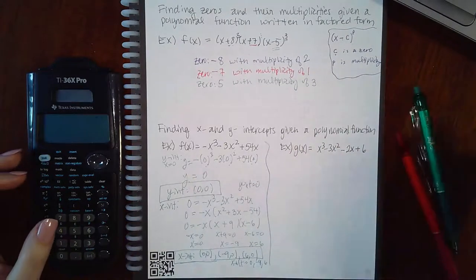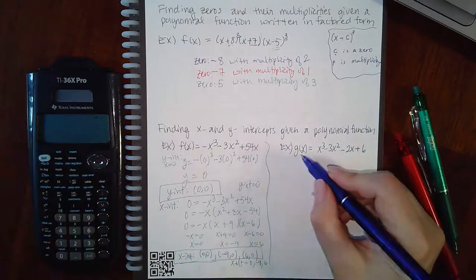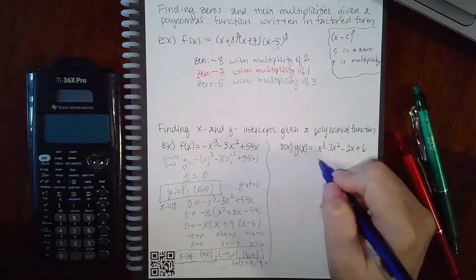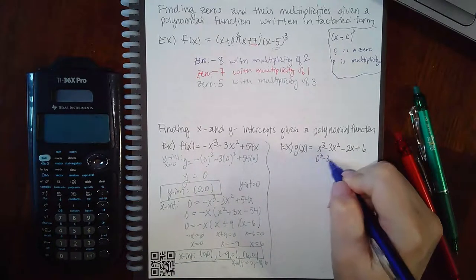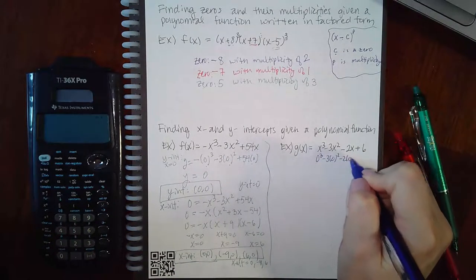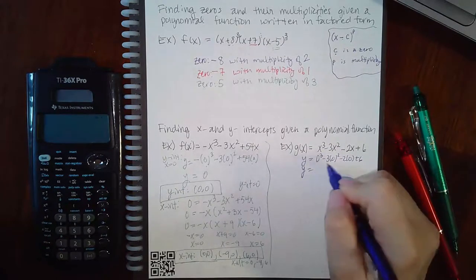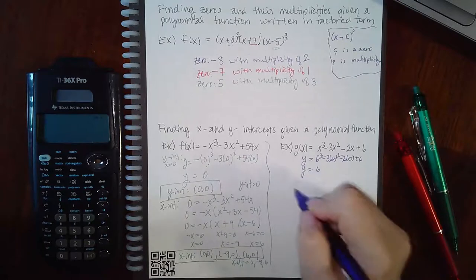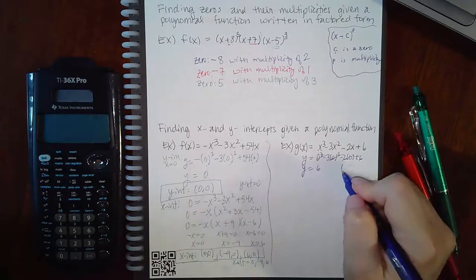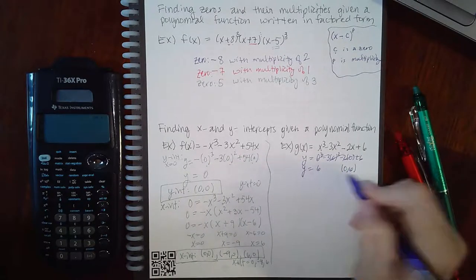Let's check out the other problem. So here we would do the y intercept first, so we're going to plug in 0 for x. And when I plug in 0 for x, I end up with y equal to 6. So the y intercept is 0, 6, or just the number 6.